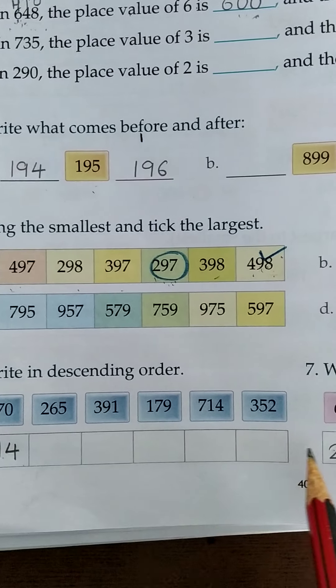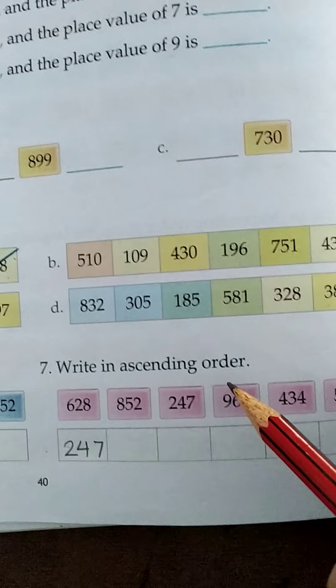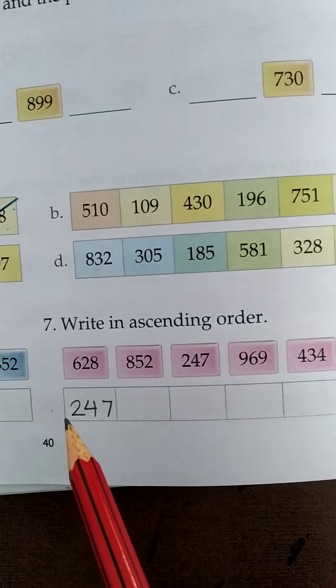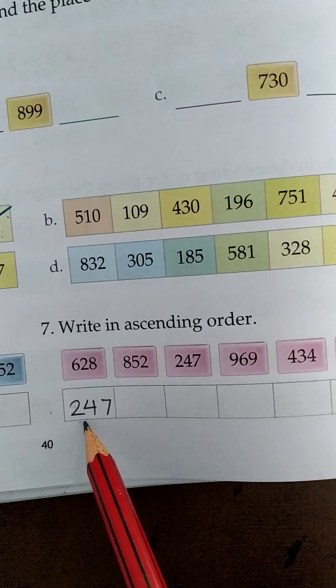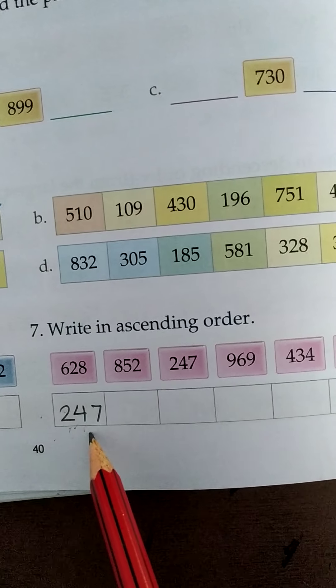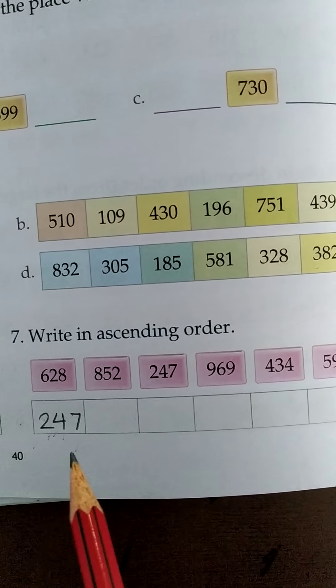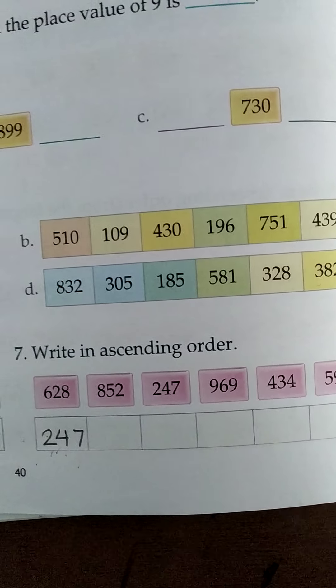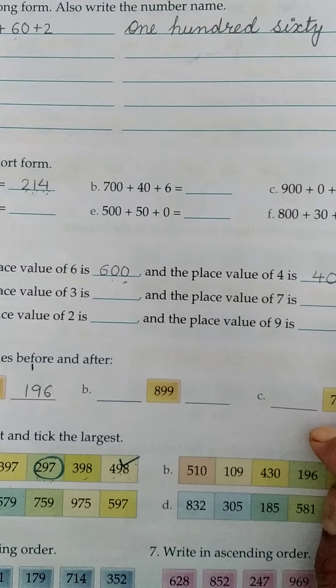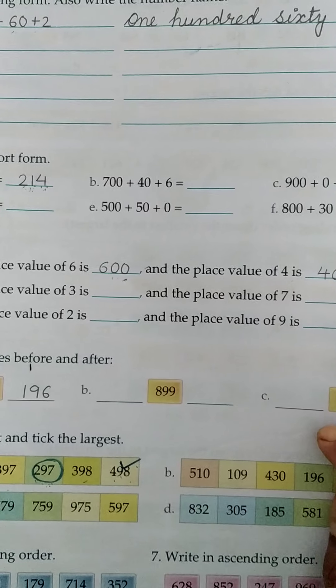In this ascending order, this is a forward counting. So we start the number with the smallest. So first we write the smallest number. 247 is the smallest. Then you have to complete the series by yourself. This is your test. You have to do this test with very neat and clean handwriting and do without any cheating.